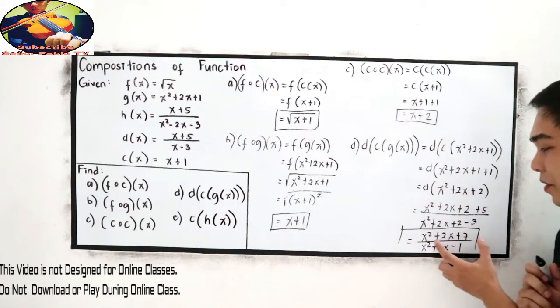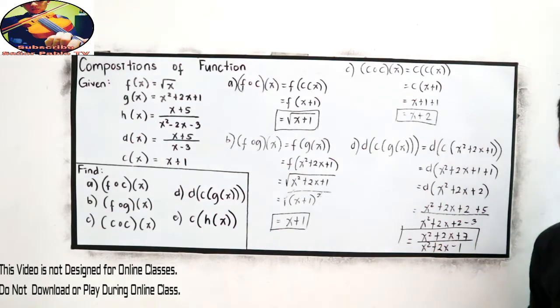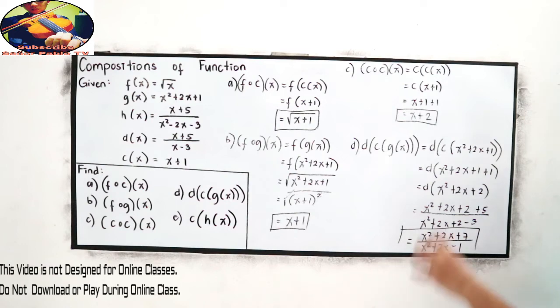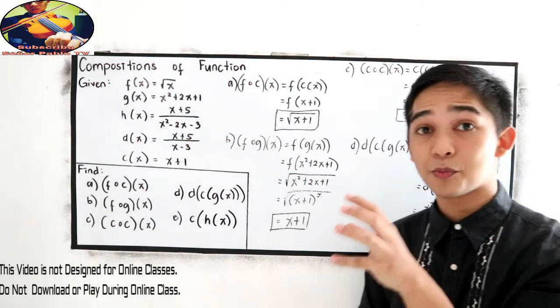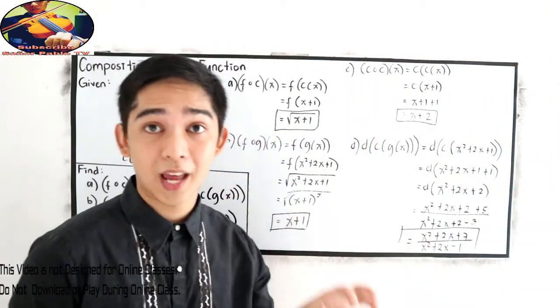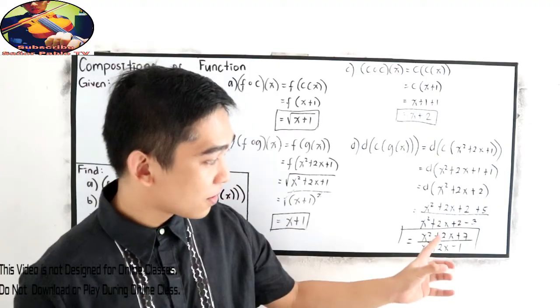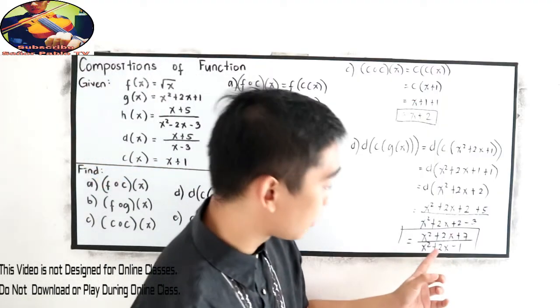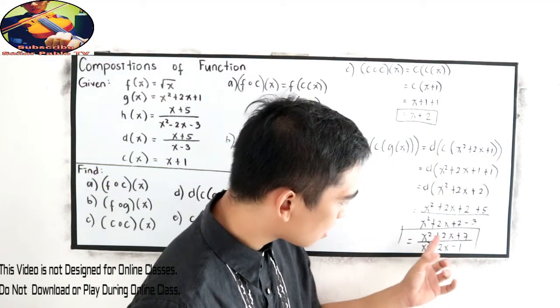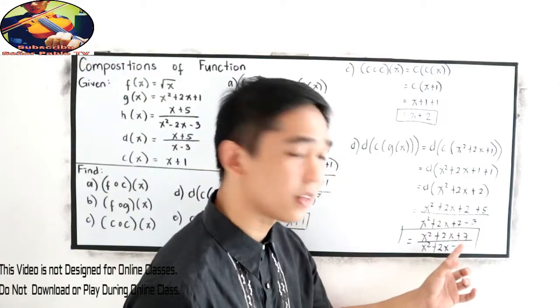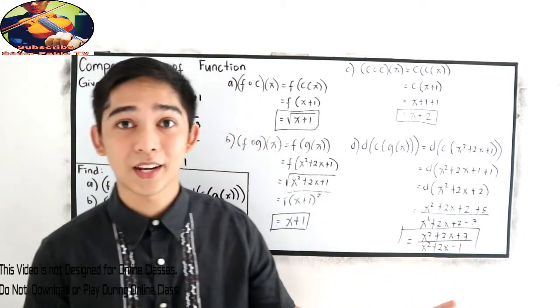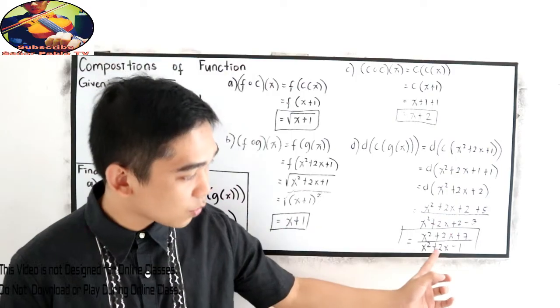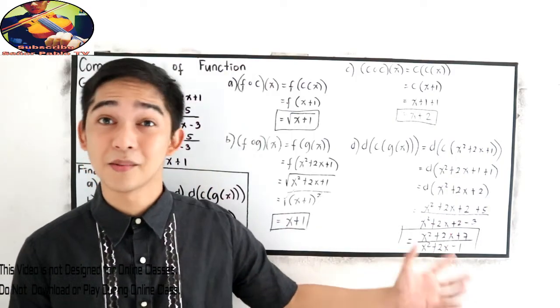So, if the numerator and denominator is factorable, you can find the factor. Then, check whether we can cancel one expression in our numerator or one expression in our denominator. So, we can simplify our expressions or our function. In this case, x squared plus 2x plus 7. We cannot simplify that. And x squared plus 2x minus 1. Also, we cannot simplify that.